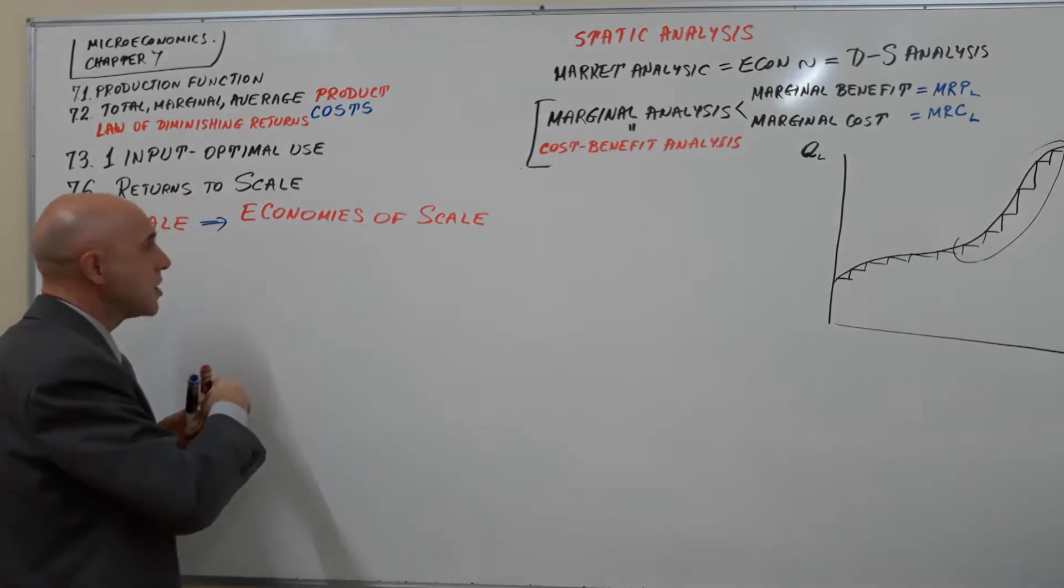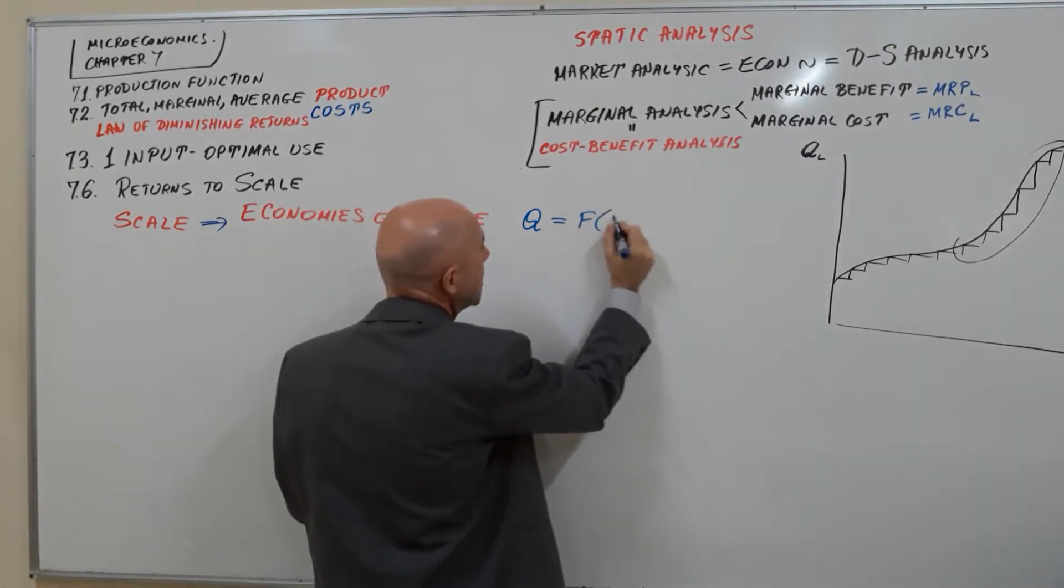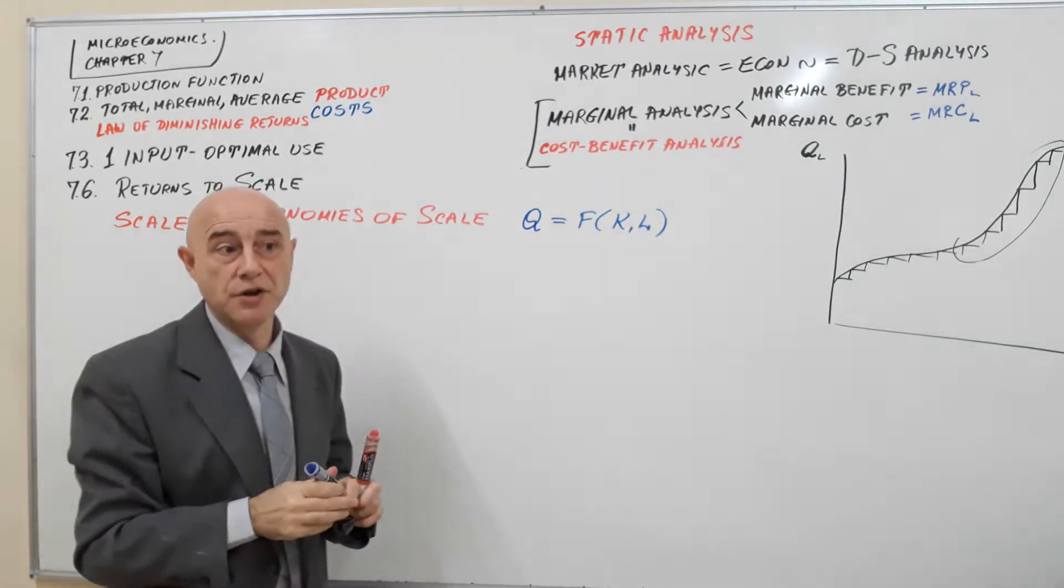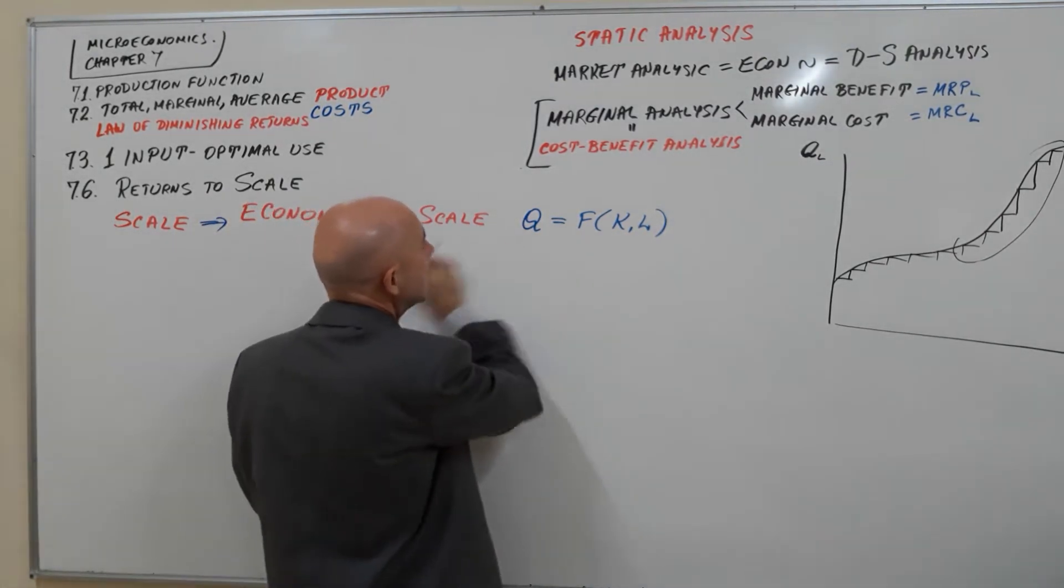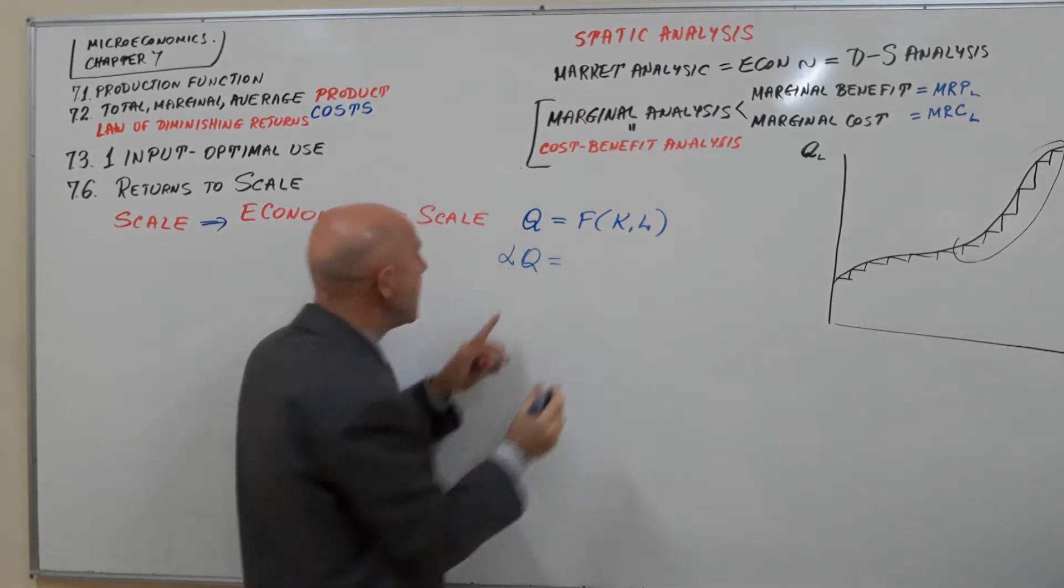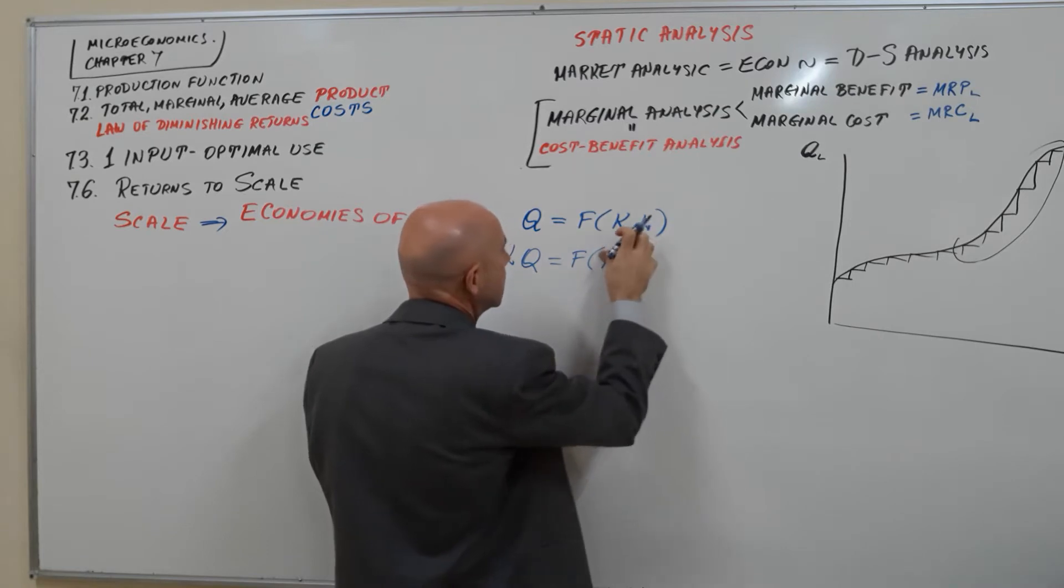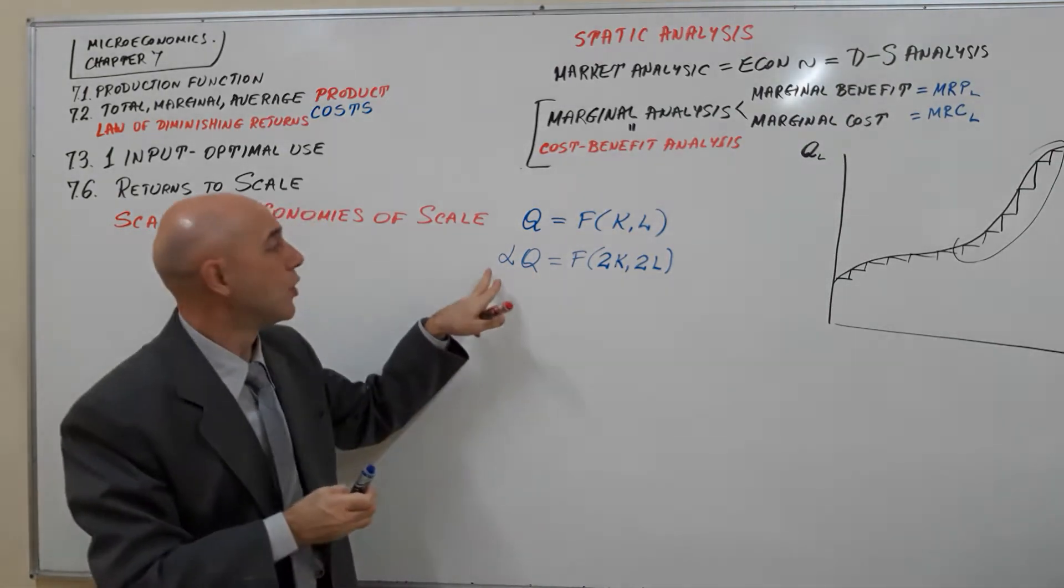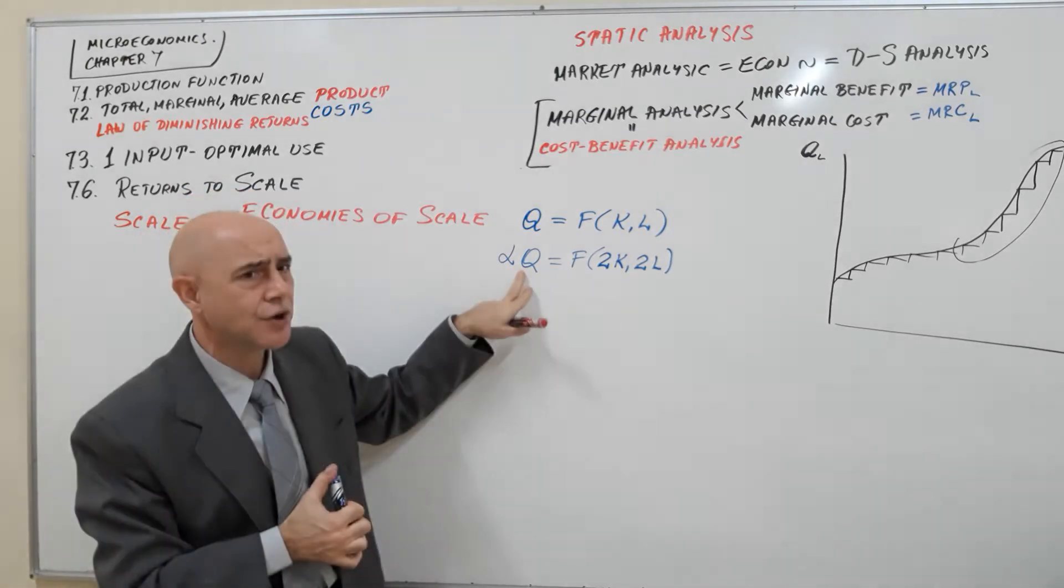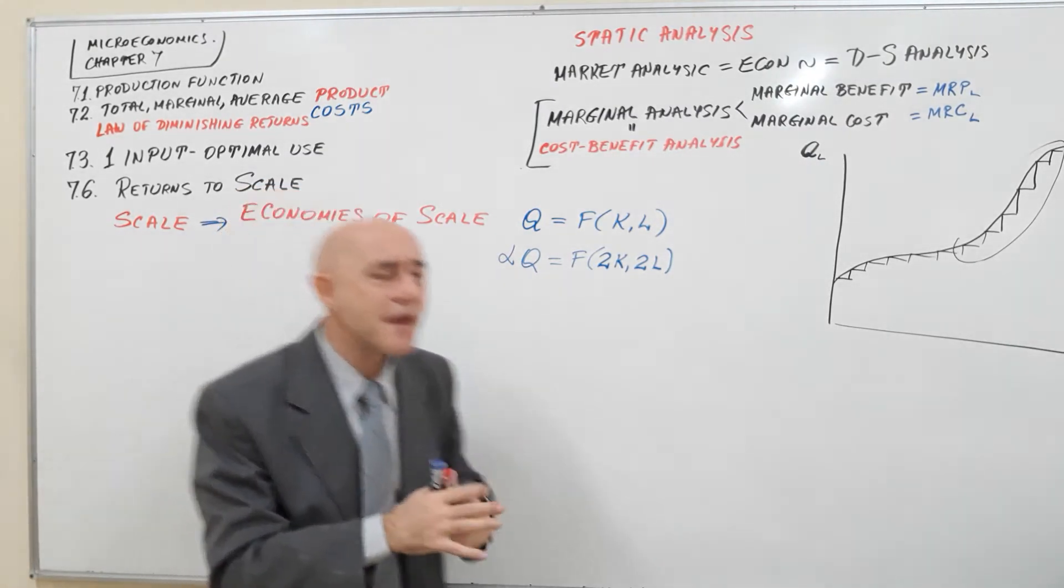Economies of scale. So you have a simple function Q which is a function of capital and labor. And if you increase, let's say double capital and labor, here you're going to have some number alpha Q. So maybe Q will increase by 20%, 30%, 50%, 100%. If you double capital and double labor at the same time, you double all inputs, well what's going to happen with alpha? Is the quantity going to increase by 2 times, 3 times, 4 times, 5 times, or maybe only half time?